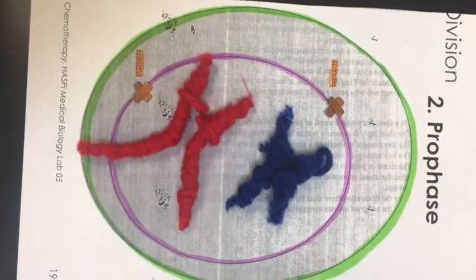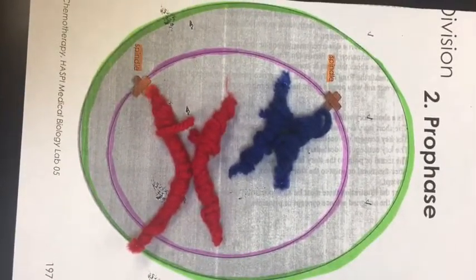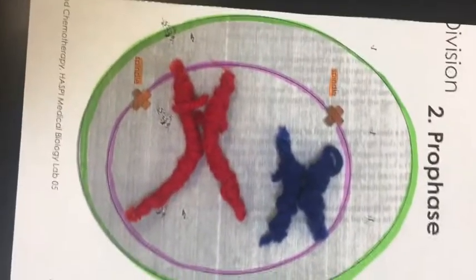Next the cell goes through prophase, a stage in which the DNA, which are chromatids, wind up to make chromosomes.